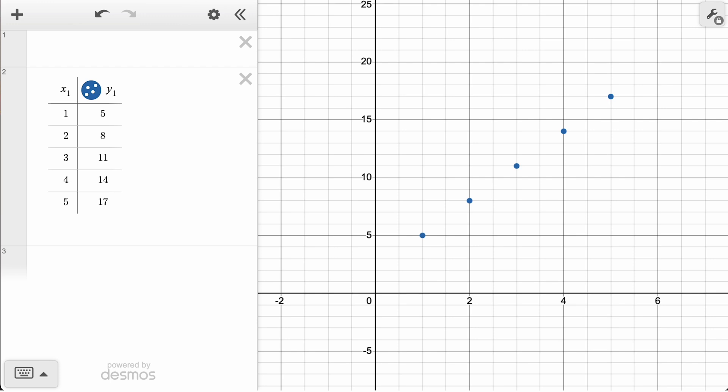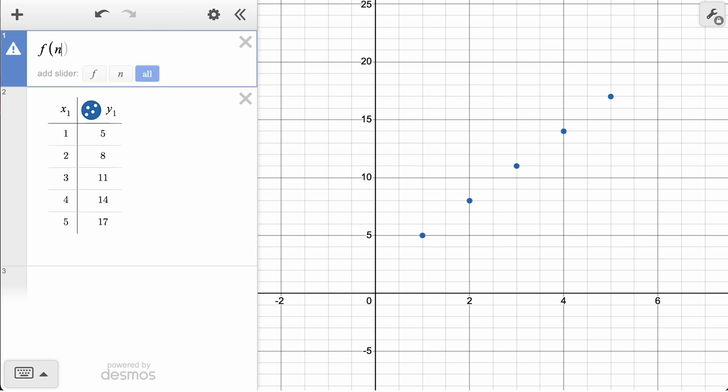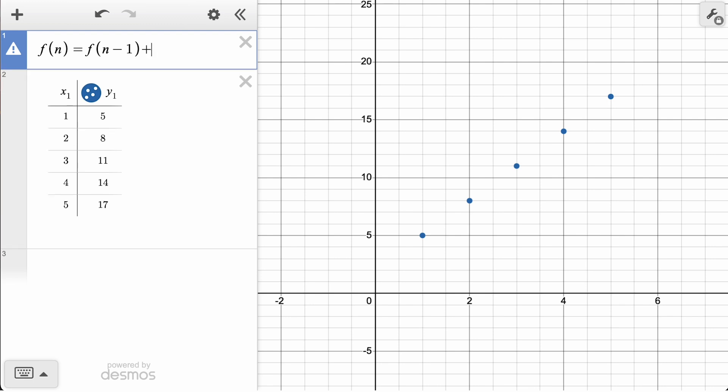Using function notation, we can begin defining this as a function f, where n represents which term we are evaluating for. We represent the previous term as f(n-1). Now because we want to increase that previous term by 3 every time, we will include a plus 3.